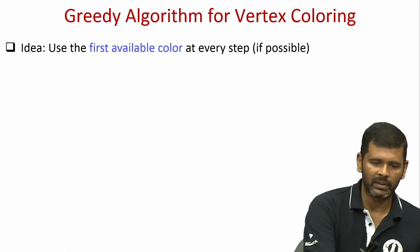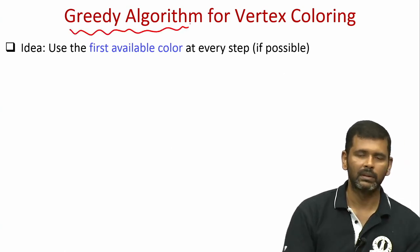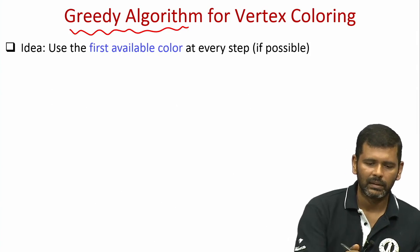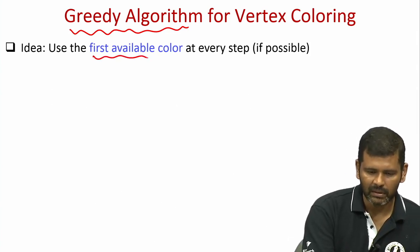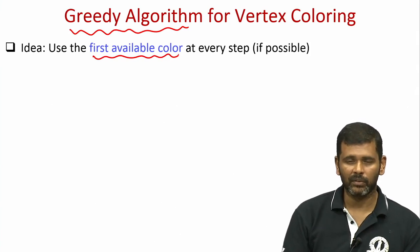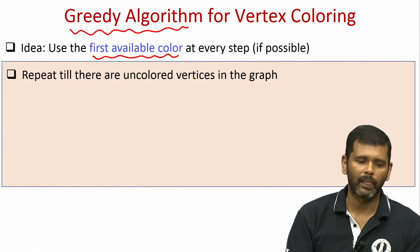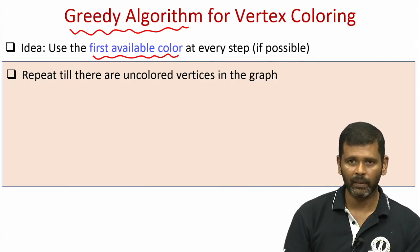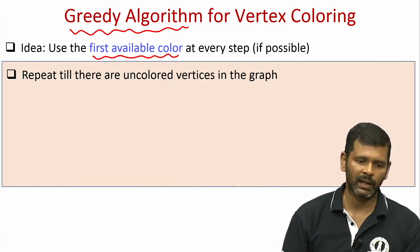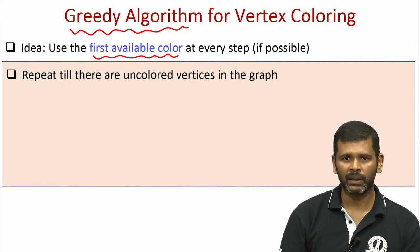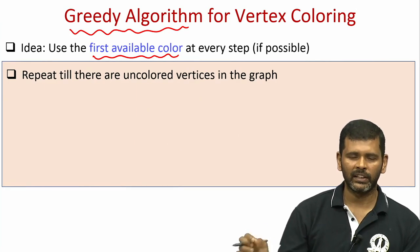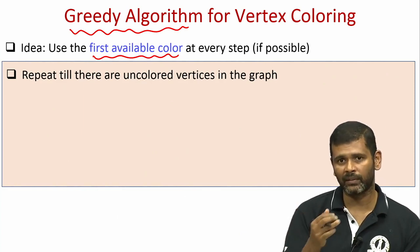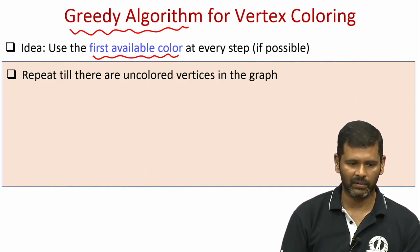This algorithm is based on the greedy strategy, which is a very popular strategy in algorithm design. The greedy strategy here is to use the first available color at every step if possible; if not possible, use a new color. More specifically, the algorithm is iterative: in each iteration we pick a new vertex for coloring and follow a greedy strategy to decide whether to use an existing color or introduce a new one.